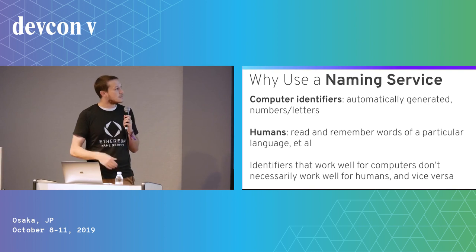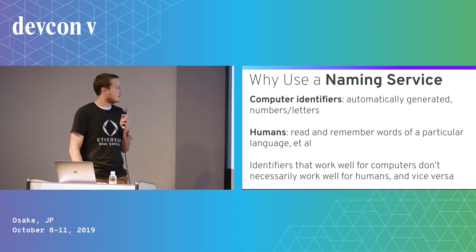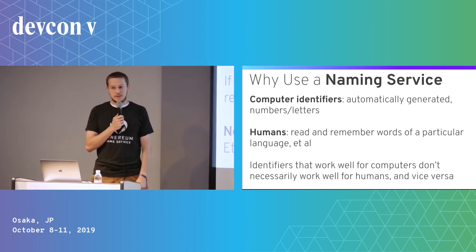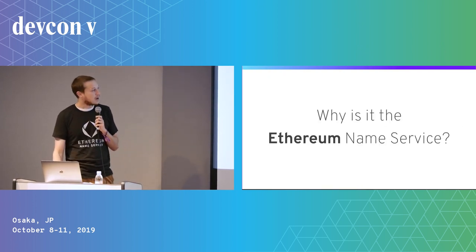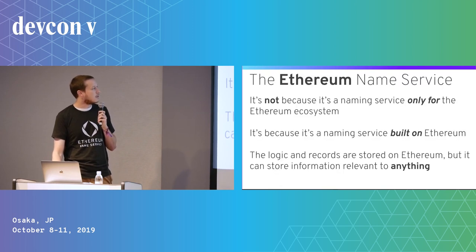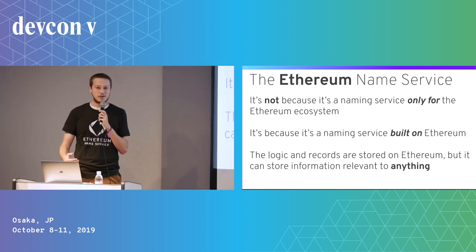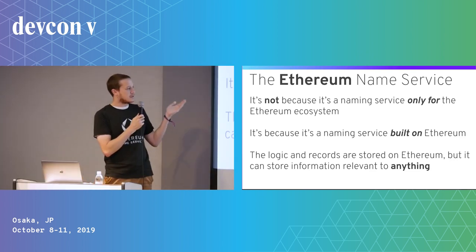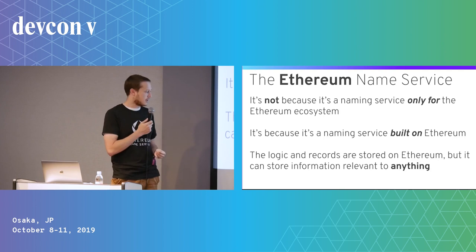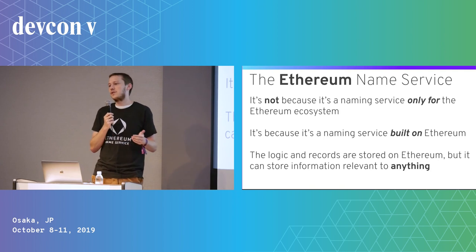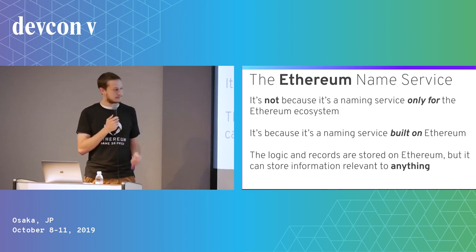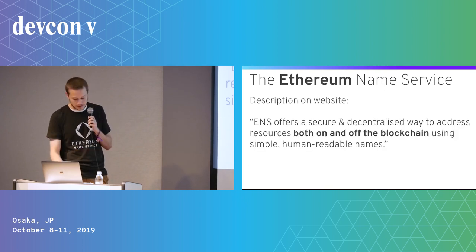ENS is a naming service — it has names, owners of names, and records that can store any information. If you have a name, you can look it up and do something with that information. Critically, it can store any information. It's not just for Ethereum. It's called the Ethereum Name Service because it's built on Ethereum, not because it's only for the Ethereum ecosystem. You could store phone numbers, your home address, a Bitcoin address — you could store anything.